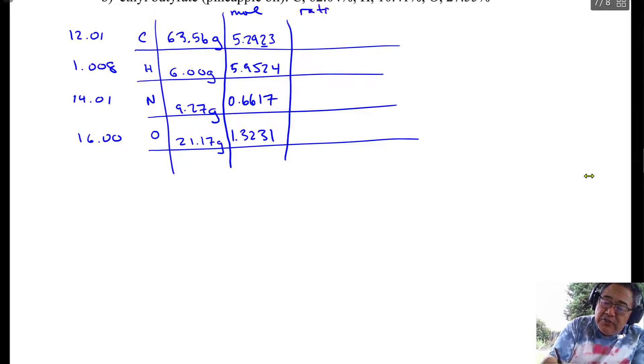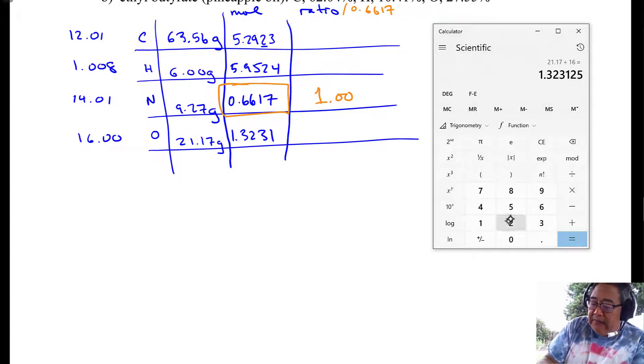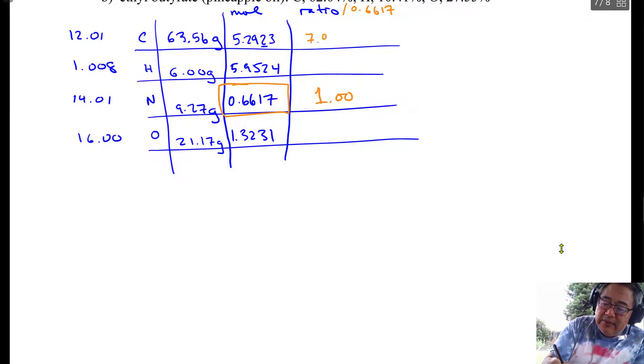And then we need the ratio. So which one are you going to divide by? Well, it's going to be the smallest one. So I will use this one. And I'm going to divide by 0.6617. I'm just going to show it once up here. So I know this is 1. That's exact. And then I'll go ahead and do the other calculations. So 5.2923 divided by 0.6617. So that's 7.998. Oh, that's good. All right. That's close to 8.